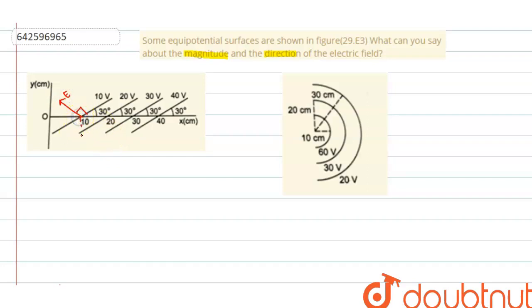And the distance between them is 10 centimeter, or we can say 10 into 10 raised to the power minus 2 meter. This distance is dx, right?